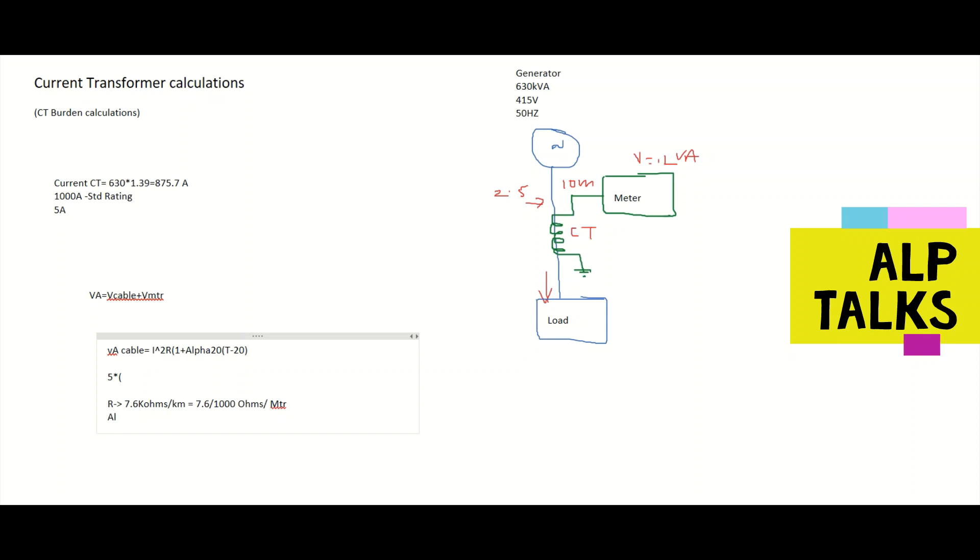The alpha value at 20 degree centigrade for copper material is 3.93 into 10 power minus 3. This is the alpha value. The operating temperature T, we can consider 90 degree.